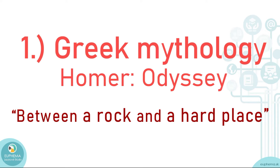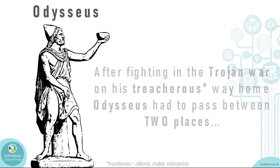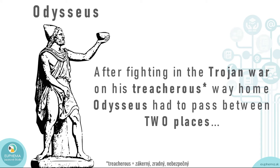In the Odyssey there is this main character, Odysseus. He was a king who fought for many long years in the Trojan War. After fighting in the Trojan War, he wanted to get back home by ship. His way home was very dangerous — it was treacherous — and at one point Odysseus had to pass between two dangerous places on his ship.